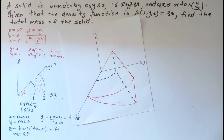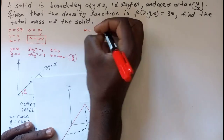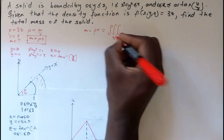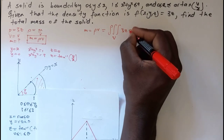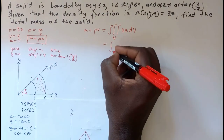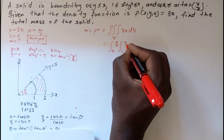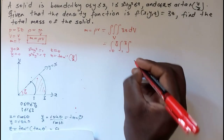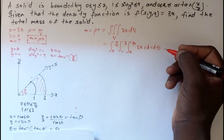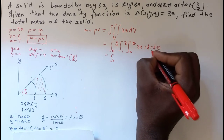Now let's set up the integral. Mass equals density times volume, which is the triple integral of the density over the volume: ∫∫∫ 3z dV. In cylindrical coordinates, with the Jacobian factor r, this becomes the integral from 0 to π/4 in θ, 1 to 3 in r, 0 to θ in z, of 3z · r dz dr dθ.